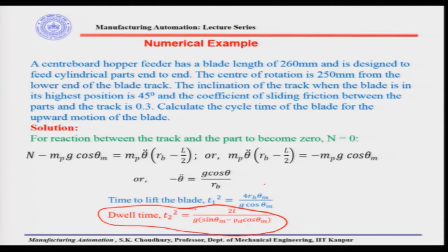Ts² = 2L / (g·sinθ − μd·cosθ), where small l is the length of the slot, θ is the inclination of the delivery chute, and μd is the coefficient of dynamic friction between the part and the chute. With the Geneva drive, the total indexing cycle period Ti equals 2Ts, giving Ti = √(8L / (g·sinθ − μd·cosθ)).